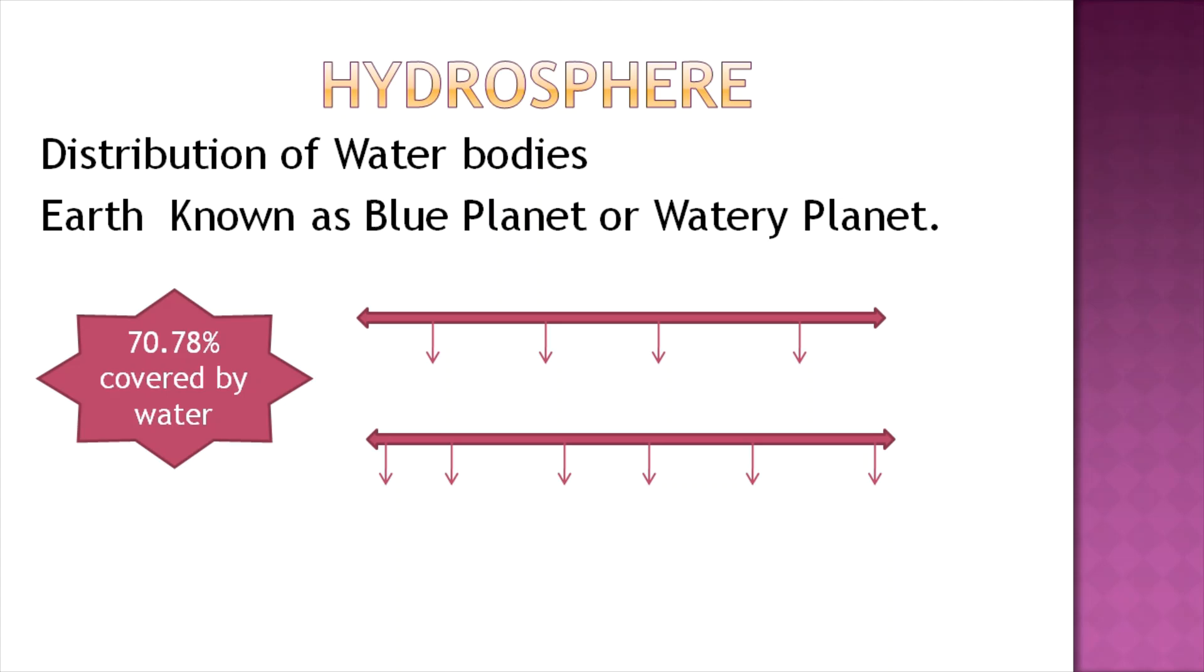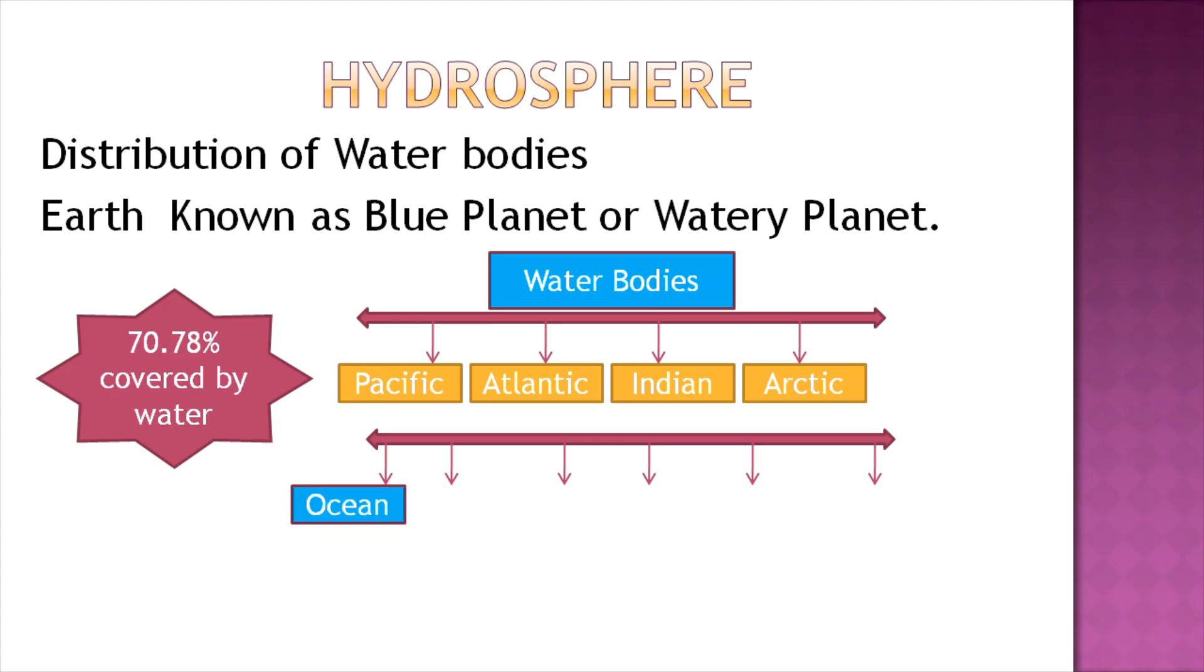What are the water bodies? First, we have the Pacific Ocean, Atlantic Ocean, Indian Ocean, and Arctic Ocean. Then we have seas, gulfs, bays, straits, and isthmuses. Oceans are deep and large expanses of water found between continents, like the Indian Ocean between Asia, Africa, and Australia.